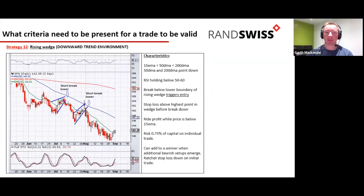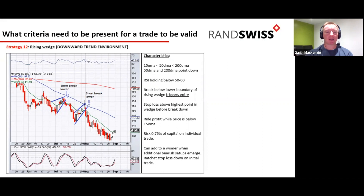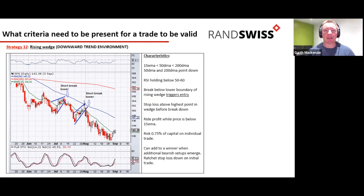The rising wedge is a continuation pattern in a declining trend. The 15-day EMA must be below the 50-day and 200-day, all pointing down, indicating downward momentum. The RSI holds below 50. The break below the lower end of the rising wedge triggers a short sale entry, with a stop above the highest point of that wedge before the break. Ride the profit while price is below the 15-day EMA or until it reaches a target. Risk 0.75% of capital — but be careful adding to winners as markets can snap back hard.